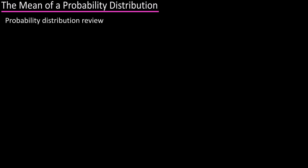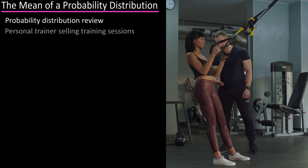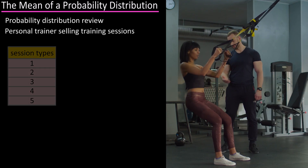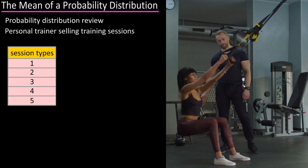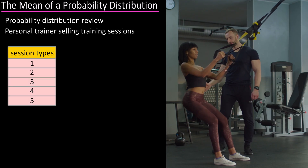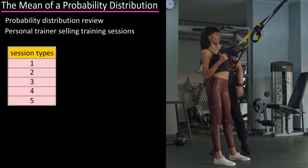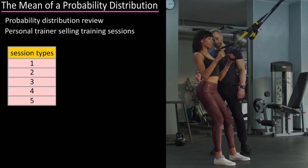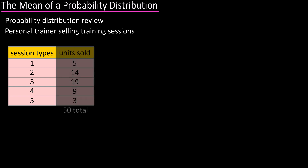In a past video, we discussed what a discrete probability distribution is. Real quick — you collect some data. Say you're a personal trainer and you sell training packages for 1, 2, 3, 4, or 5 sessions. The number of sales for each of the session packages is listed in this frequency table.